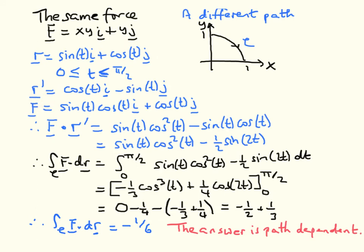Differentiating with respect to T: the derivative of sine is cosine, and the derivative of cosine is minus sine, giving r'(T) = cos(T)·i − sin(T)·j. F can now be rewritten in terms of T: x=sin(T), y=cos(T), so F = (sin(T)·cos(T))·i + cos(T)·j. Taking the scalar product of F and r', we get sin(T)·cos²(T) plus (−sin(T)·cos(T)), giving sine(T)·cos²(T) − sin(T)·cos(T).